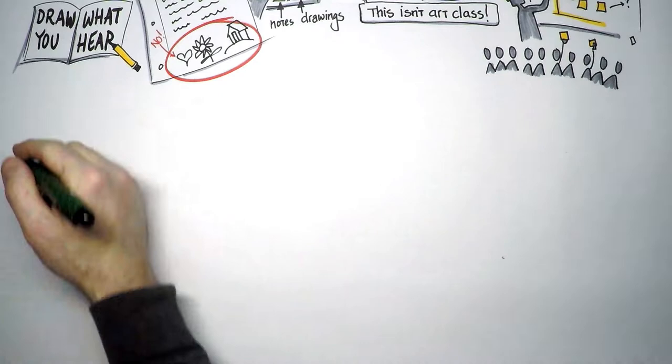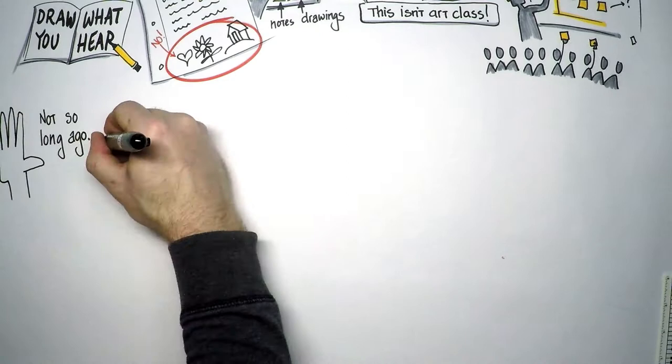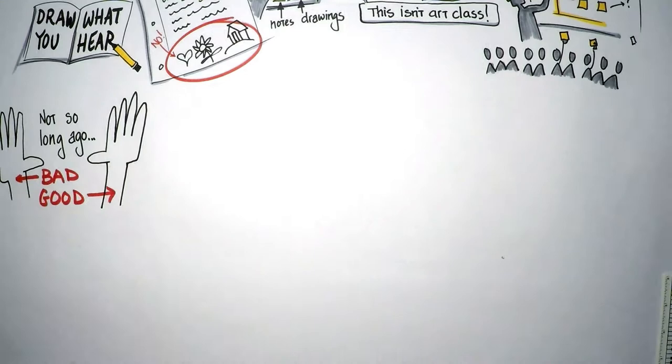I believe doodling is today what left-handedness used to be. My grandfather was left-handed. His teachers would beat his knuckles with rulers if he didn't write with his right hand. He got by at writing with his right hand, but as a result he developed a stutter. He got out of school, started writing with his left hand, and immediately lost his stutter.